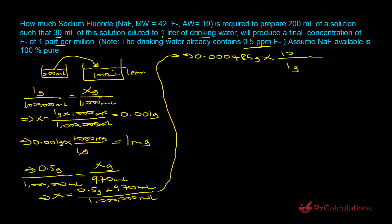Converting 0.000485 grams to milligrams: 0.000485 g × 1000 mg/g = 0.485 milligrams. The fluoride that needs to be added from our solution is the difference: 1 mg − 0.485 mg = 0.515 milligrams of fluoride ion.